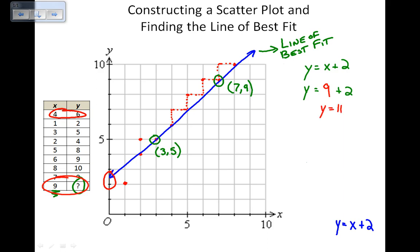If we take a look at our graph, we wanted x as 9. But here's x as 9. We follow that all the way up. y would be approximately 11. So this seems like a great approximation for us.